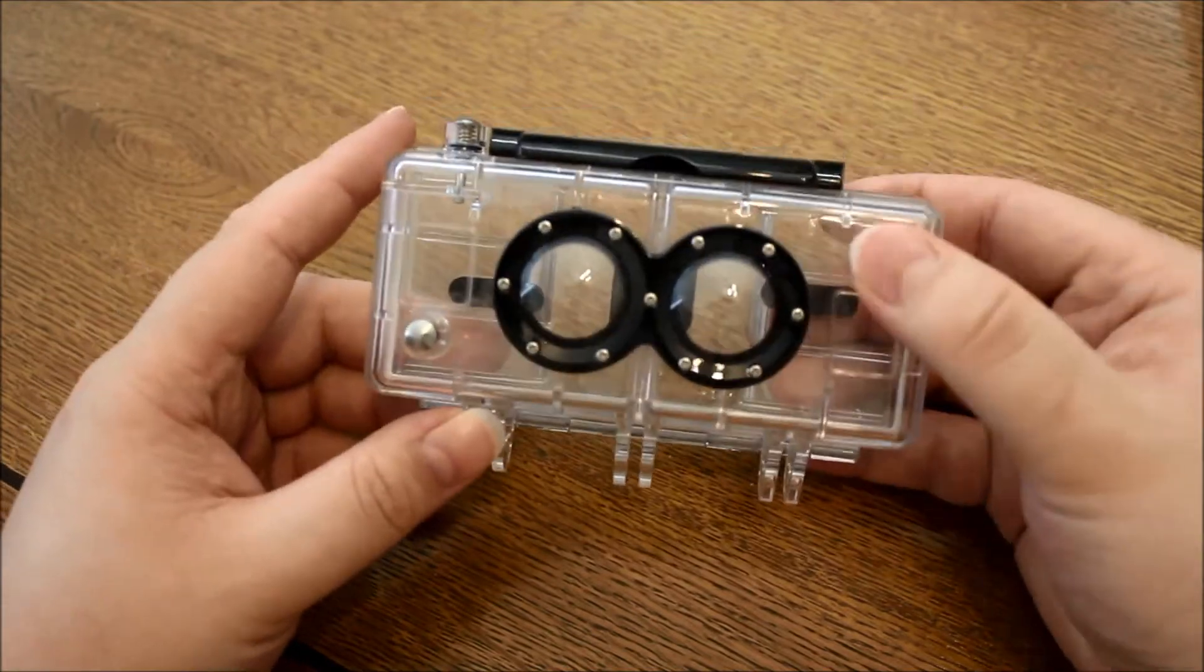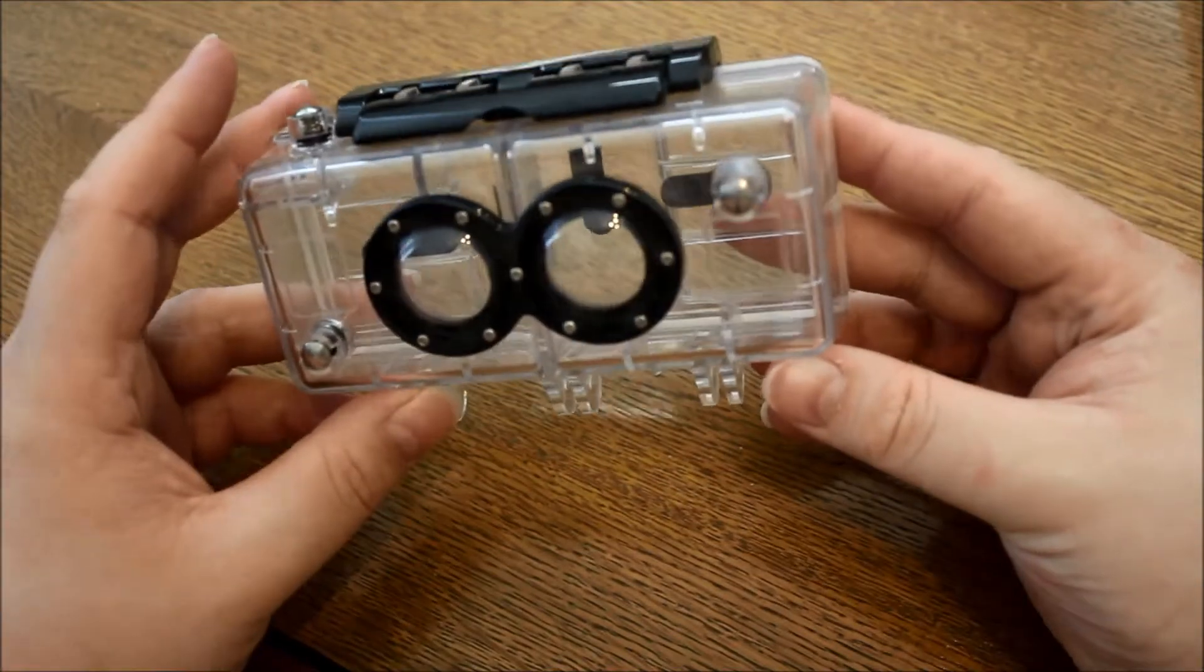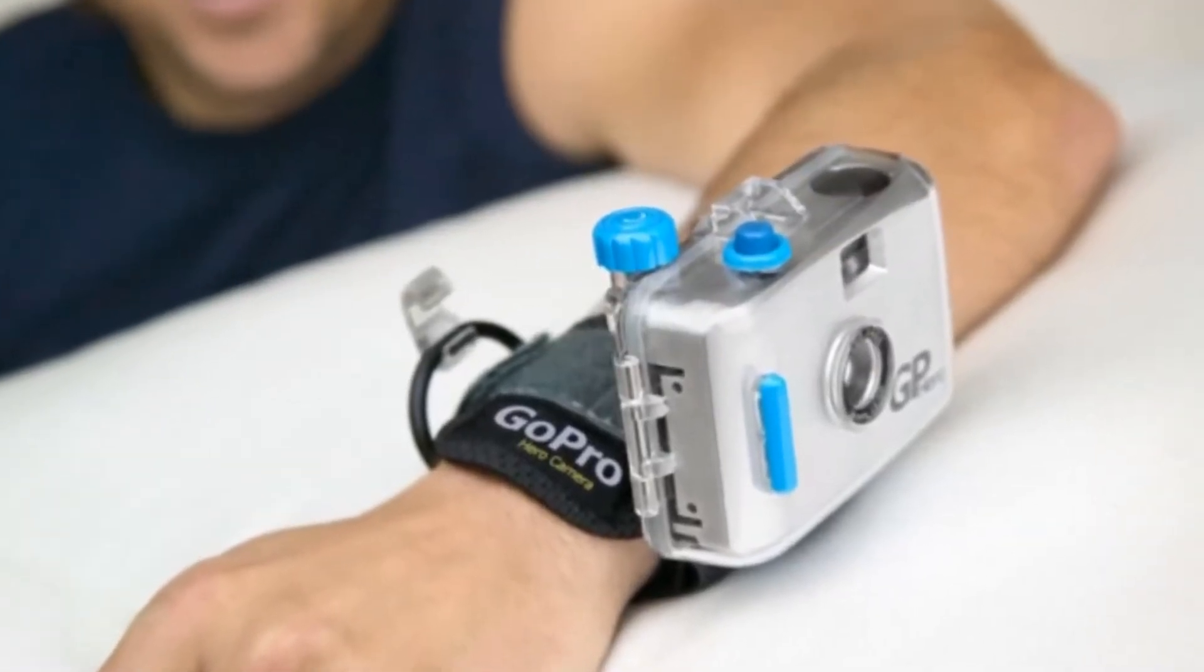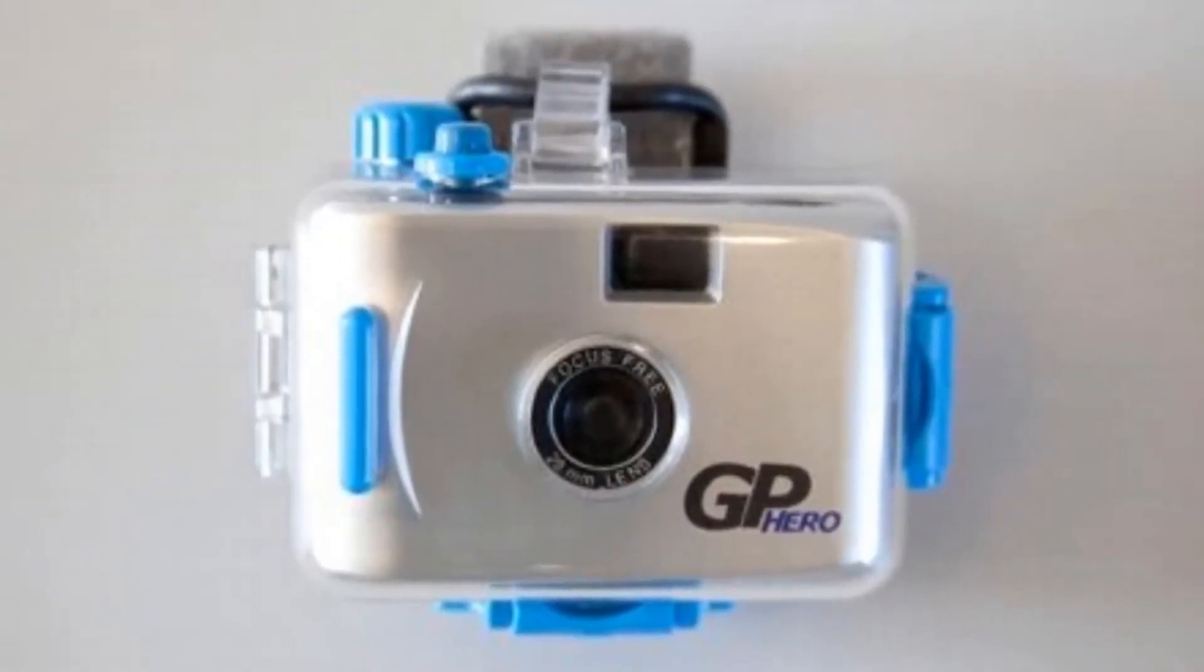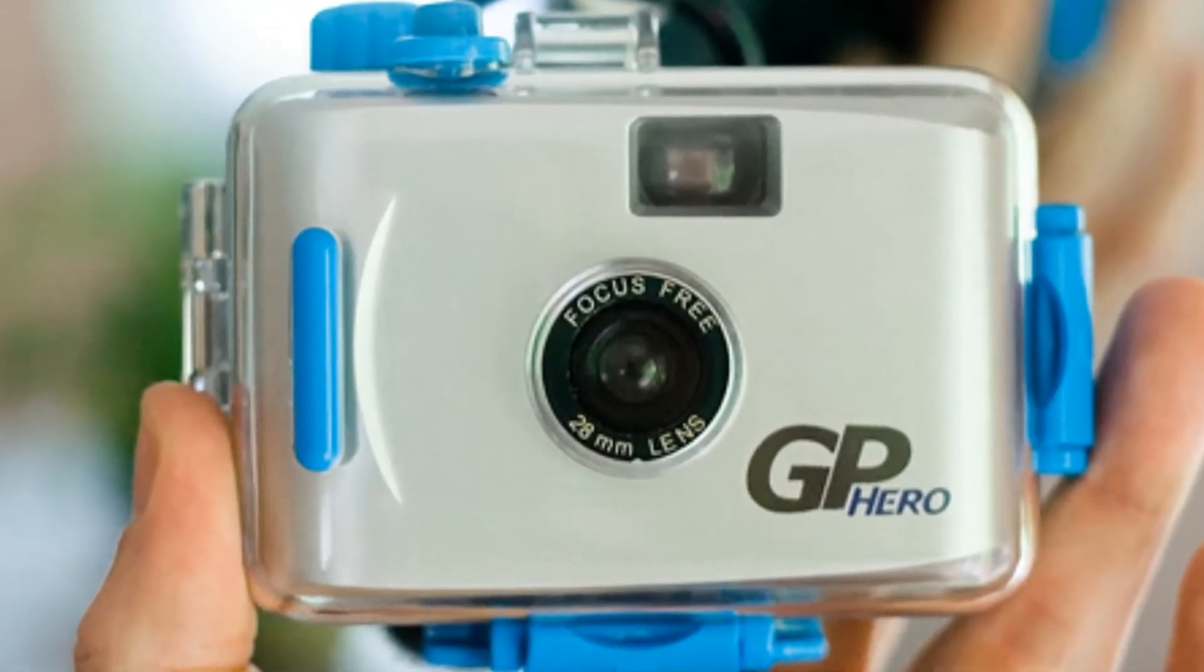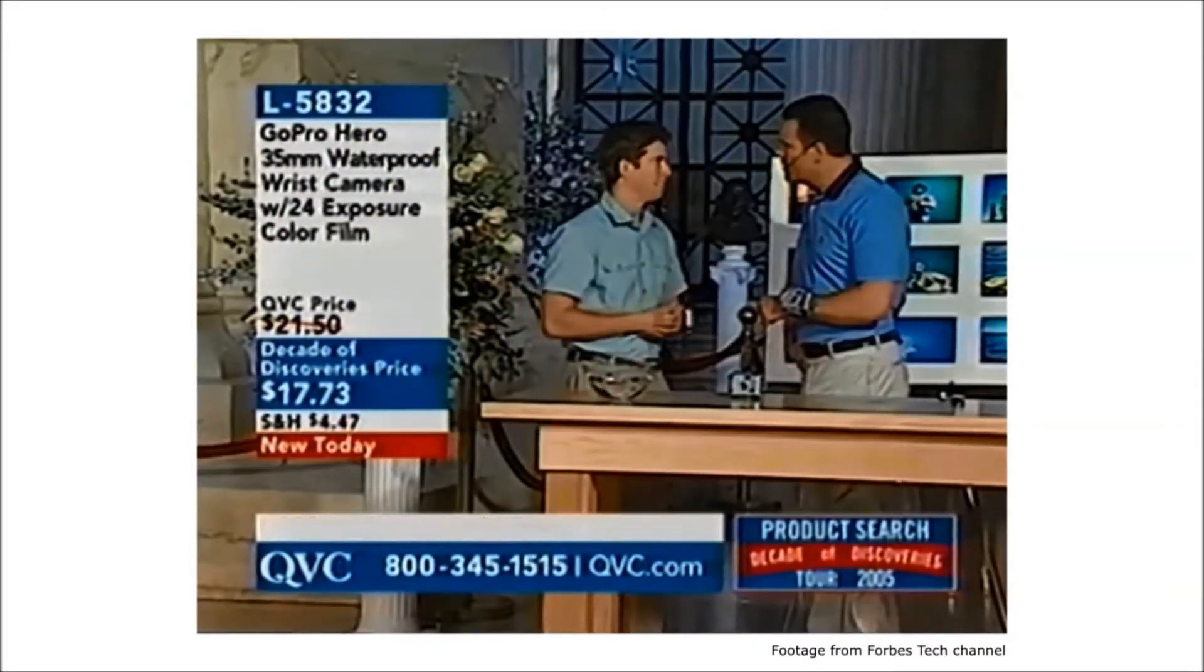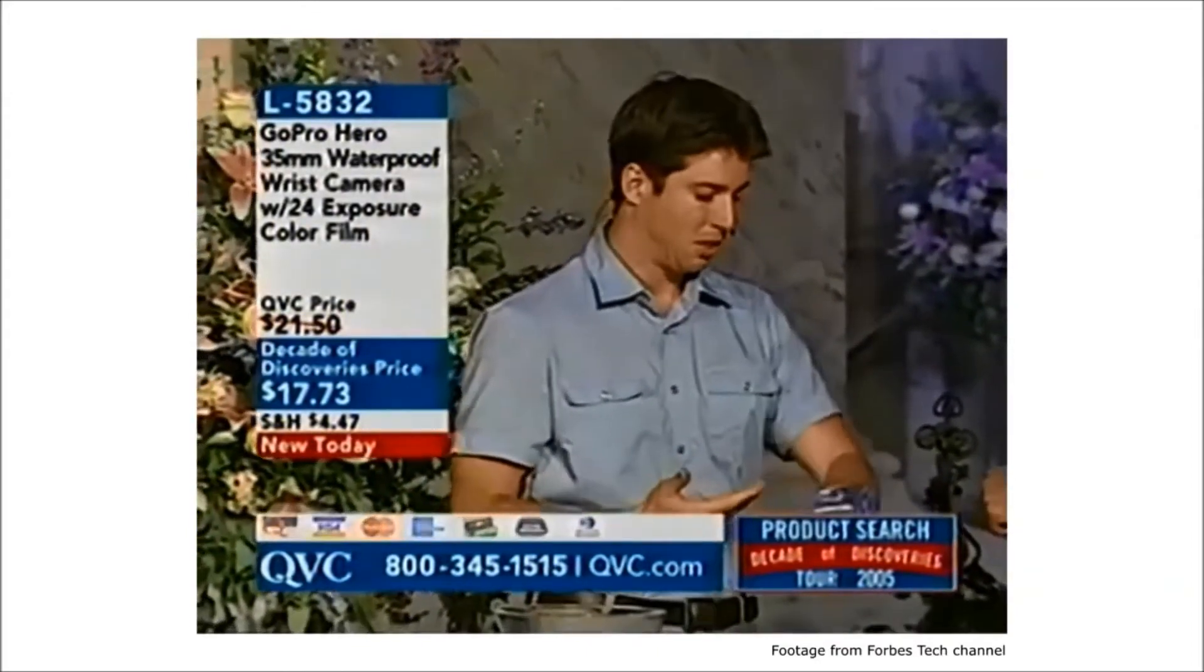And now we are coming to the secret of this little diving camera. This diving camera is actually a GoPro. And to prove I am not lying, here are some pictures of the original, first, one and only GoPro Hero. And this makes it the cheapest GoPro you can still buy on Earth. It's around ten bucks for a new GoPro without the GoPro branding. And now another piece of history.